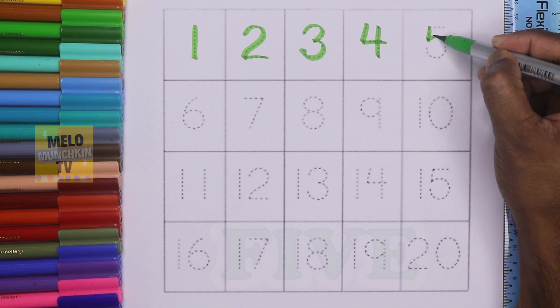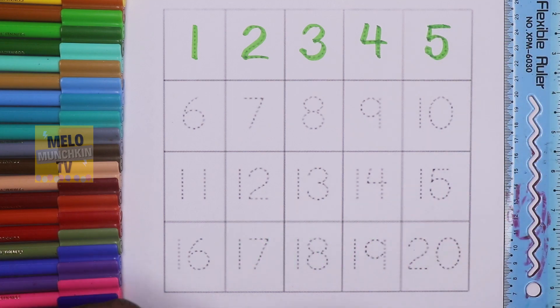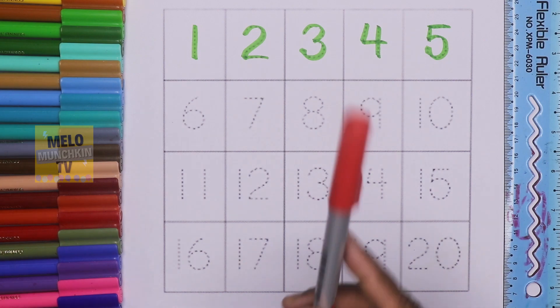This is number 4, four. This is 5, five. Let's take some other color, red color.